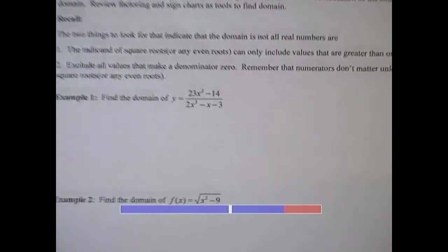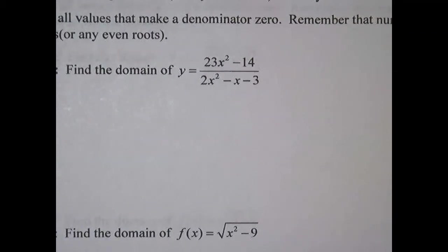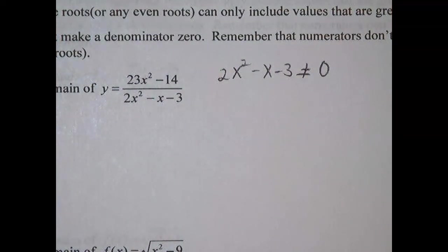Okay, so let's look at our first example. We're looking for the domain of this function. Now the first thing to notice is that there's no square root, so there's no problem thinking of a radicand or inequalities. All we have to do is focus on the denominator and make sure that 2x² - x - 3 can't be zero. So we have to make sure that if there's any values that will make that zero, those values have to be excluded from the domain.